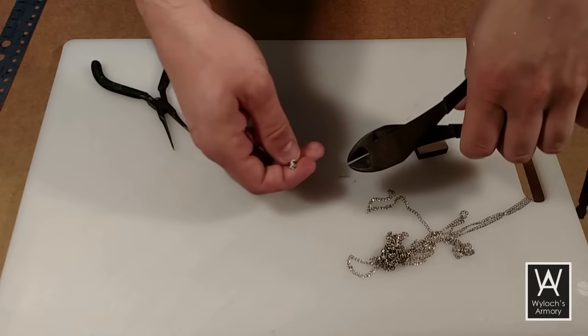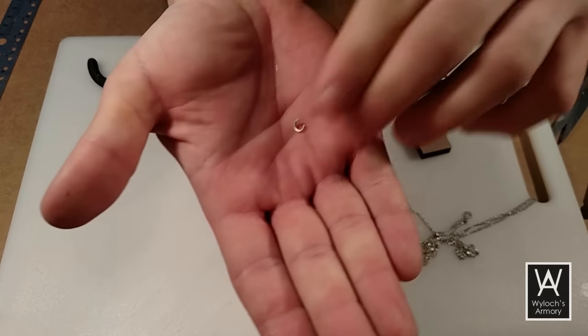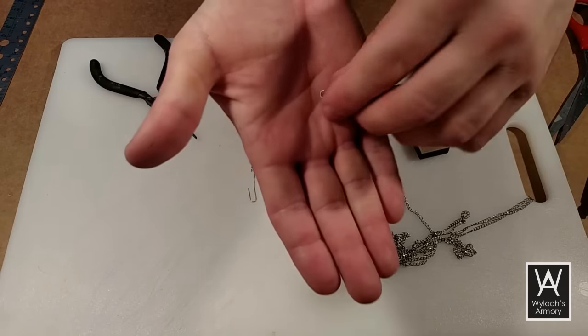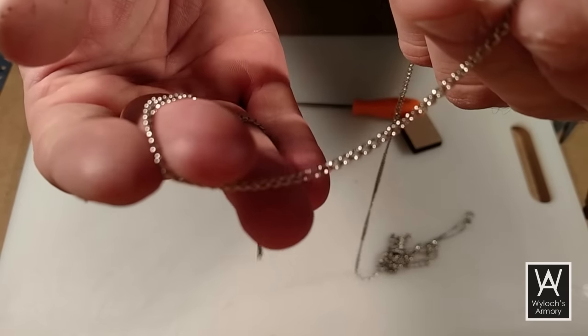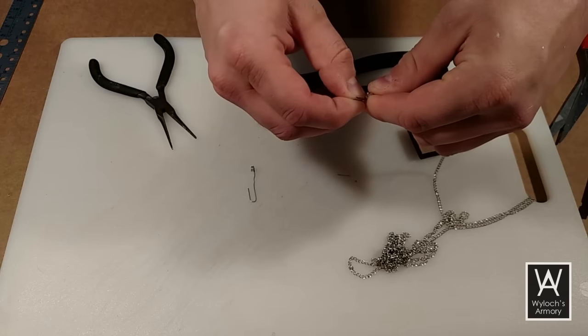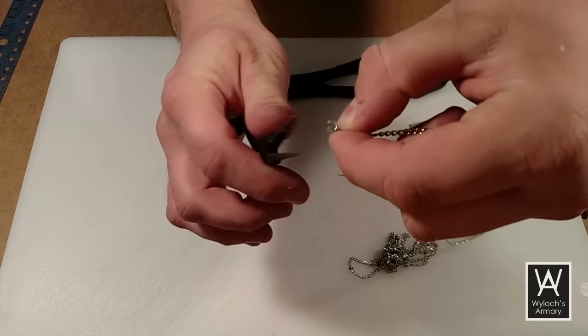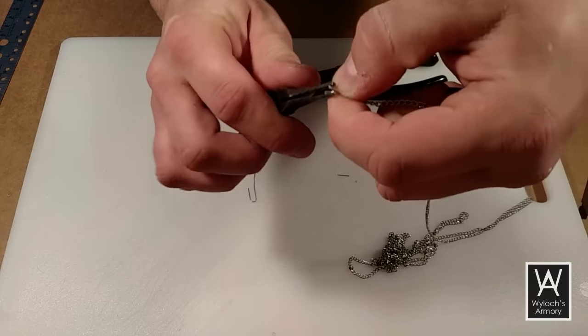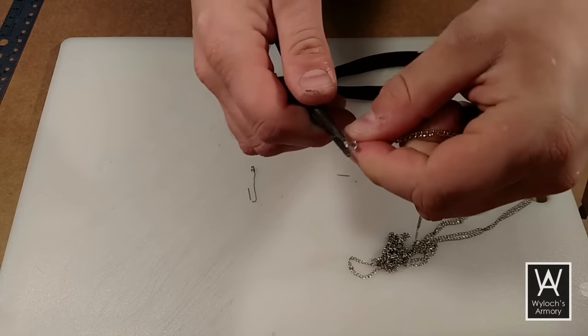And with wire cutters, I'll snip off a single loop. Now this is some necklace chain which you can get at any craft supply store. I'm just going to thread my paper clip loop through the last link in the chain. And then cinch it shut with some pliers.